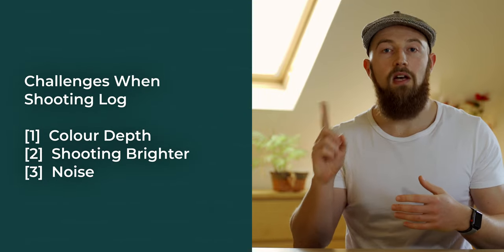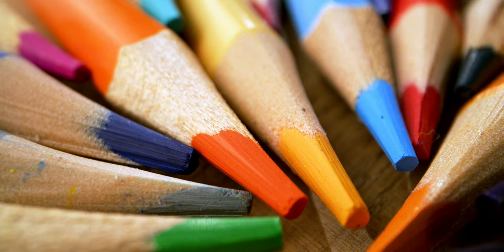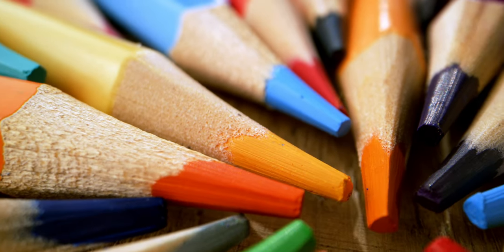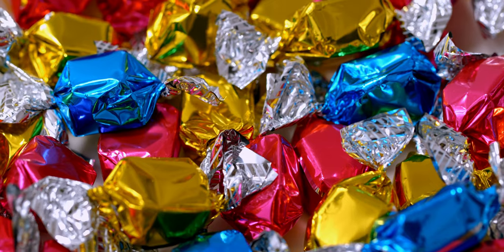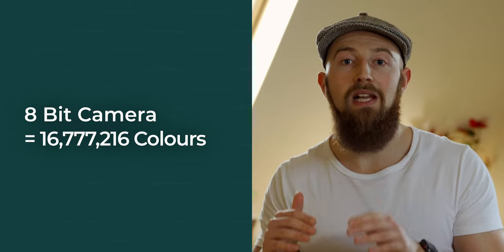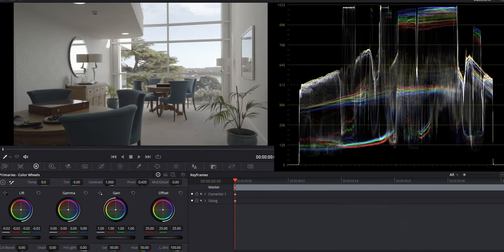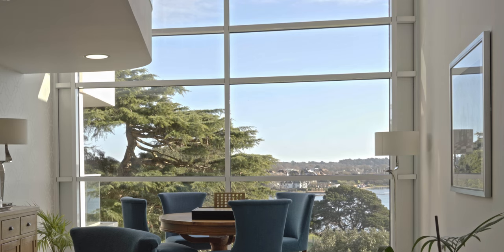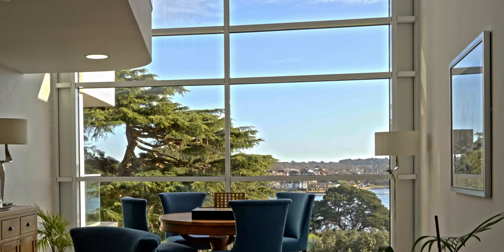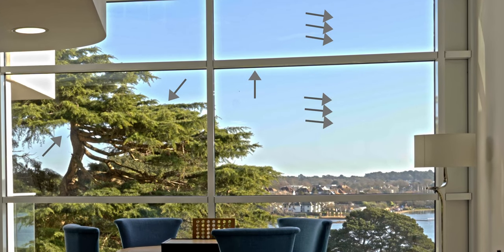So for most situations you want as much dynamic range as possible to keep both your shadows and highlights detailed, which leaves most filmers flocking to their preferred log picture profiles. However, log profiles aren't perfect — there are three main issues: colour depth, shooting brighter, and increased noise. Colour depth is how many individual colours your camera can actually define. Even the majority of top-range mirrorless cameras pre-2020 can only film 8-bit colour, which defines over 16 million individual colours. But if you film in more aggressive log or flat formats, 8-bit is not enough, because as you stretch out that flat image and saturate it, there isn't enough colour data left and the footage can fall apart, resulting in colour bands where it wasn't recorded with enough colour information to achieve a nice gradient.